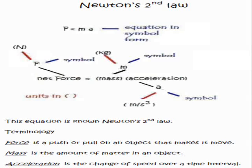The mass in physics, the units are kilograms and acceleration the symbol is a, and the units for acceleration are meters per second squared.